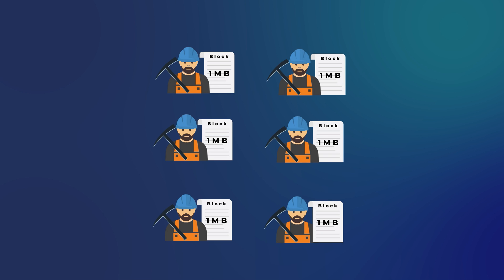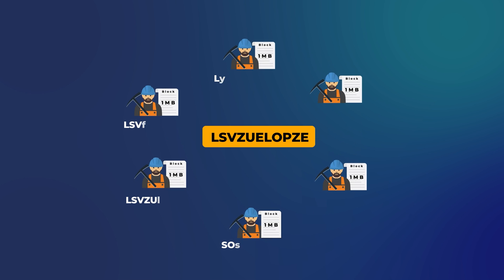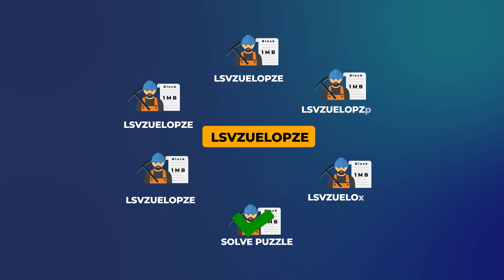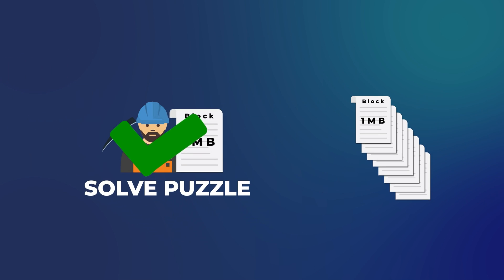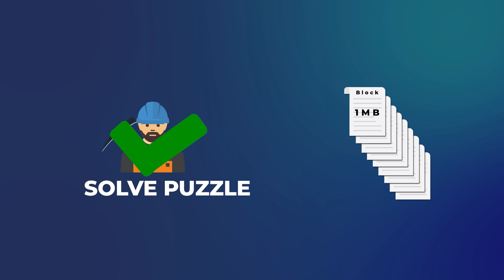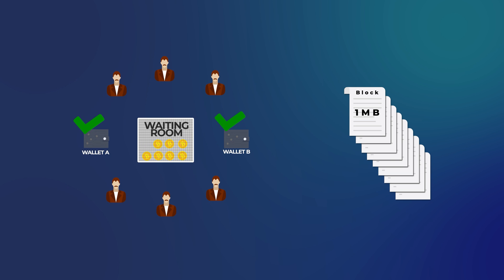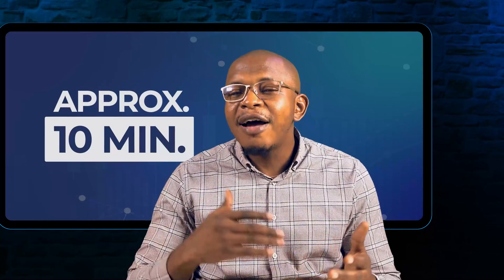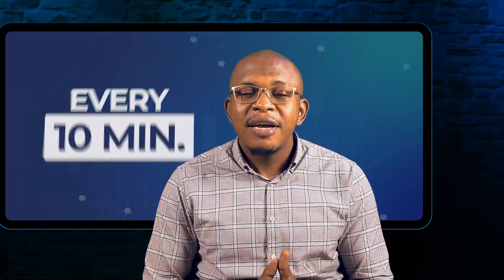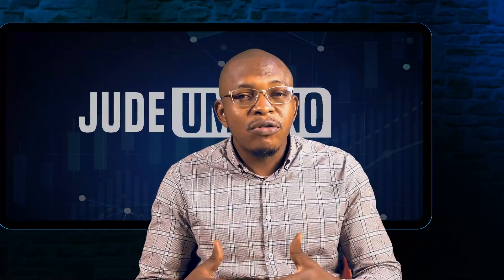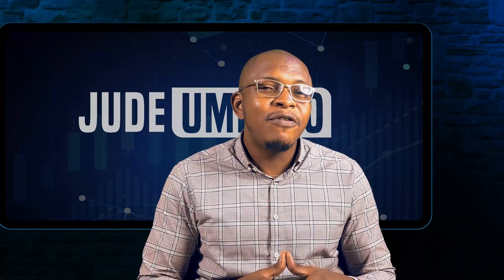Then they will compete to solve a puzzle. The first miner to solve this puzzle earns the right to add his block on top of the previous blocks in the bitcoin network. He will also receive a reward in bitcoin. At this point, my transaction will have received one confirmation. When another block is added on top of this block, it will receive the second confirmation, and so on. This process takes approximately 10 minutes and repeats every 10 minutes.